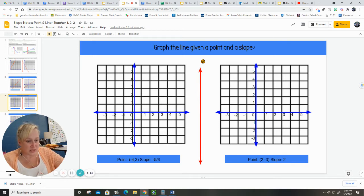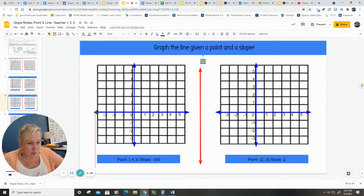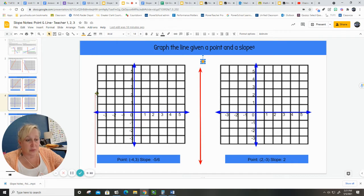So first I'm going to drag my point to negative 4, 3. So negative 4 would be here. And then positive 3 would be up here. So that's where that point is.